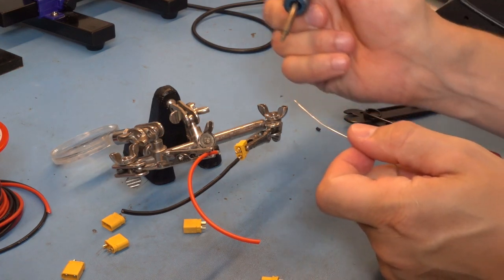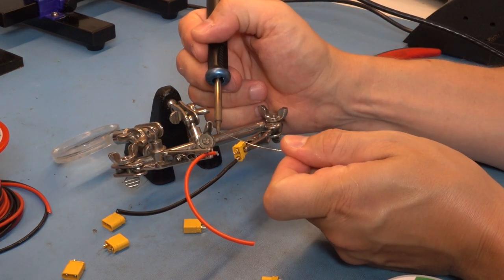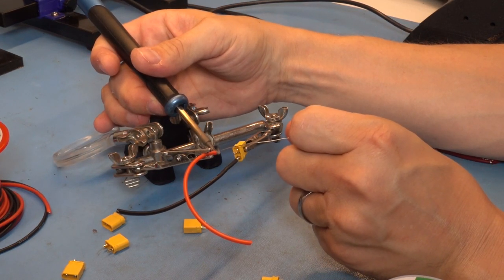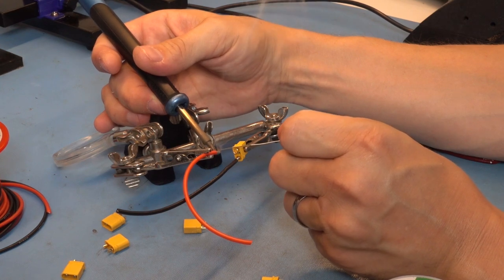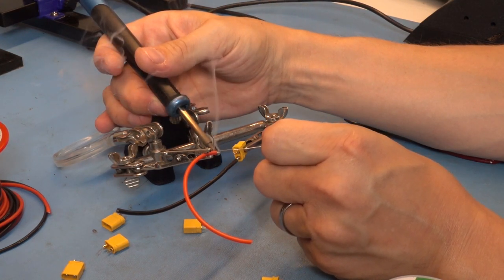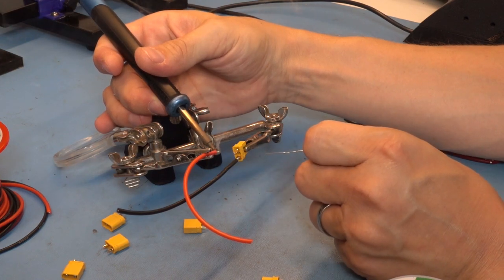We'll do the same operation where I wet the tip of the iron, touch it to the bottom of the strands, and then touch fresh solder to the top of the strands until the solder flows all the way through the wire and saturates the strands.